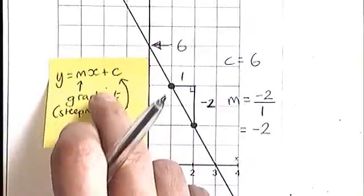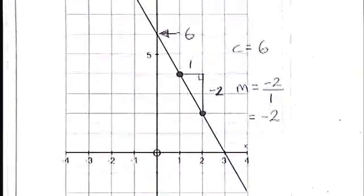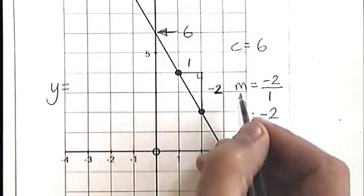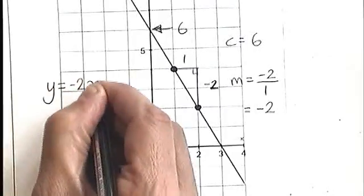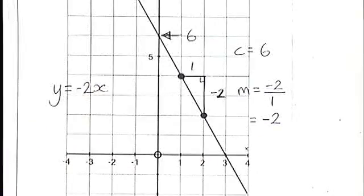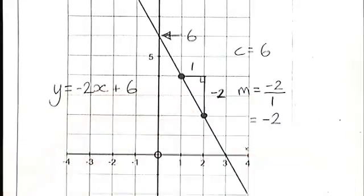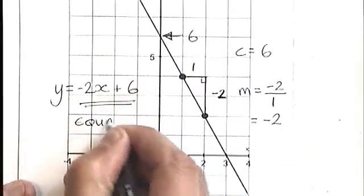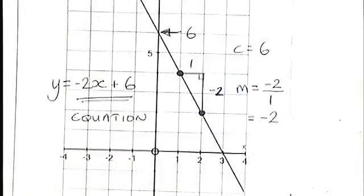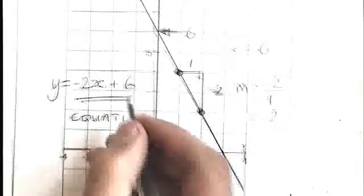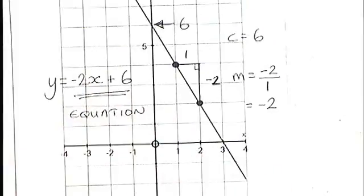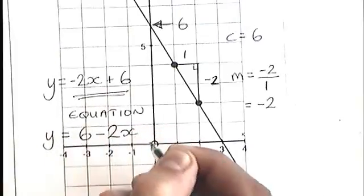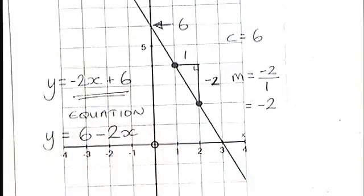So let's go ahead and try now to write the equation of this line. I think it goes like this. y equals m, which is minus two, multiplied by x, and then add c, which is six. That is the equation of this line. You might choose to switch those two around and write it like this: y equals six minus two x. Either of those would be acceptable.